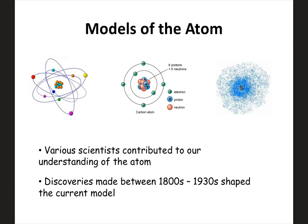We are going to take a little trip down memory lane in this video. We're going to look at the different models of the atom and how our understanding has changed over time. There were a lot of scientists that contributed to this, and just looking at these three pictures at the top, our idea of what the atom looks like has changed — anywhere from the 1800s to the 1930s. We'll look at the different models of the atom and see where we are today.